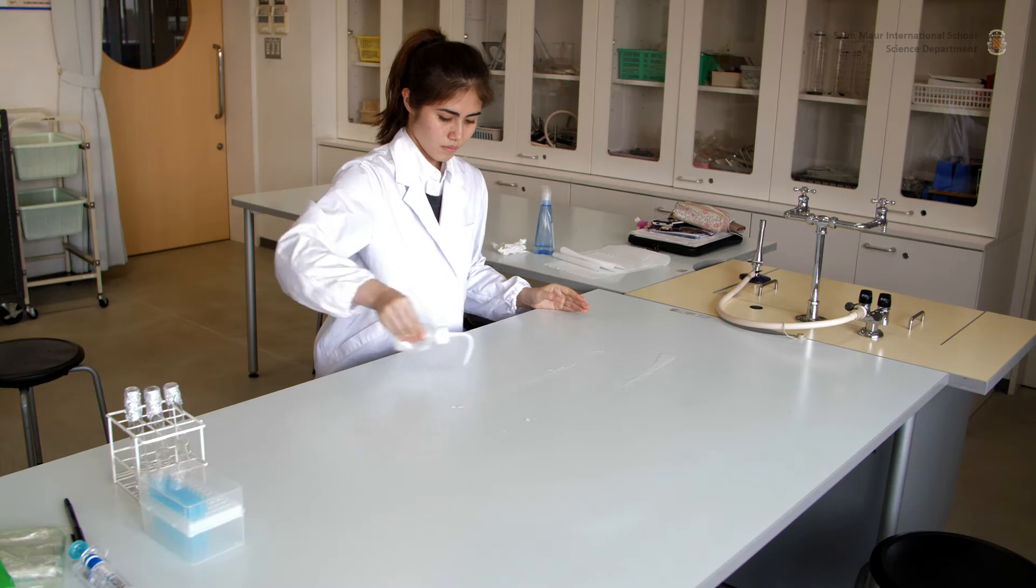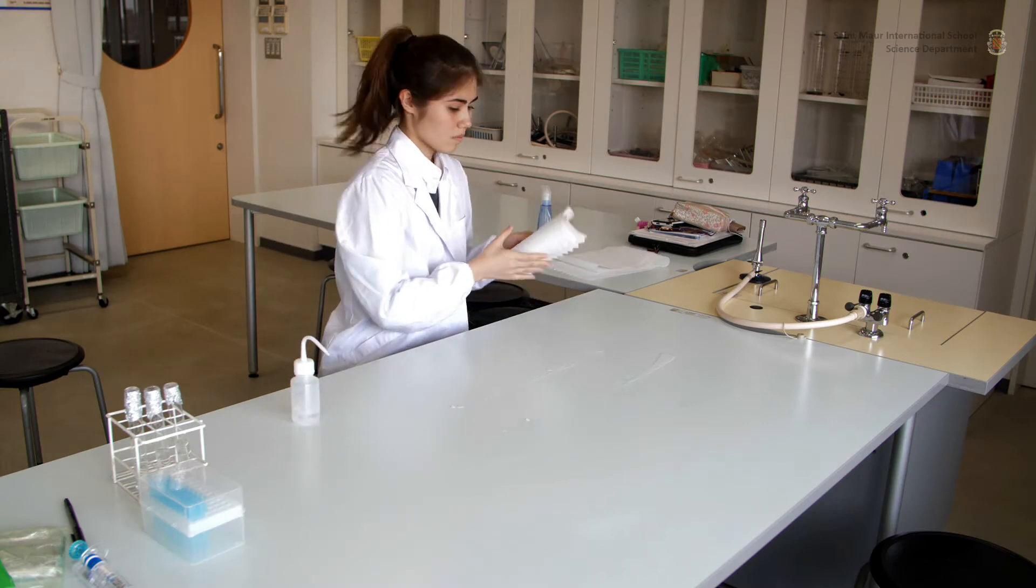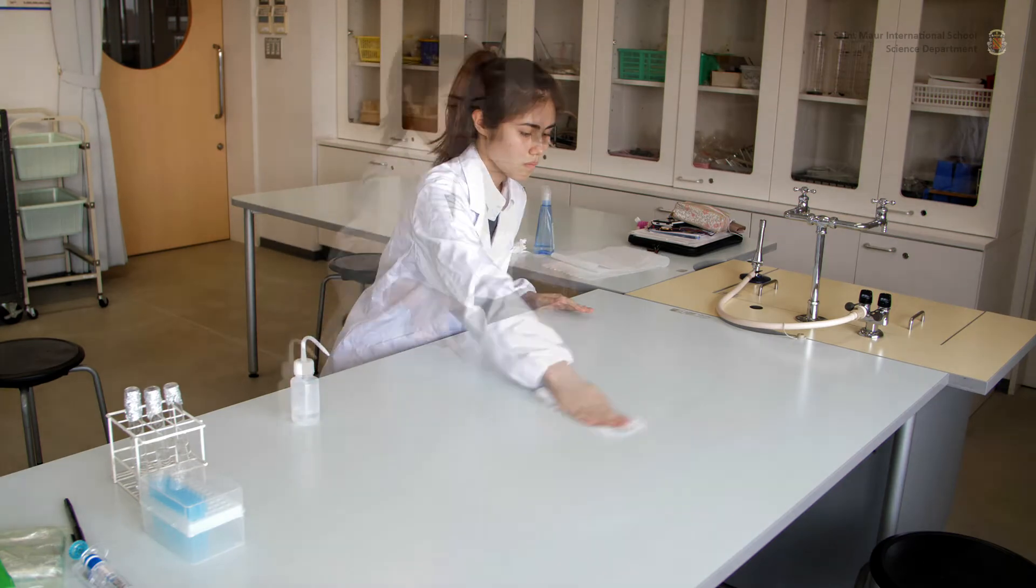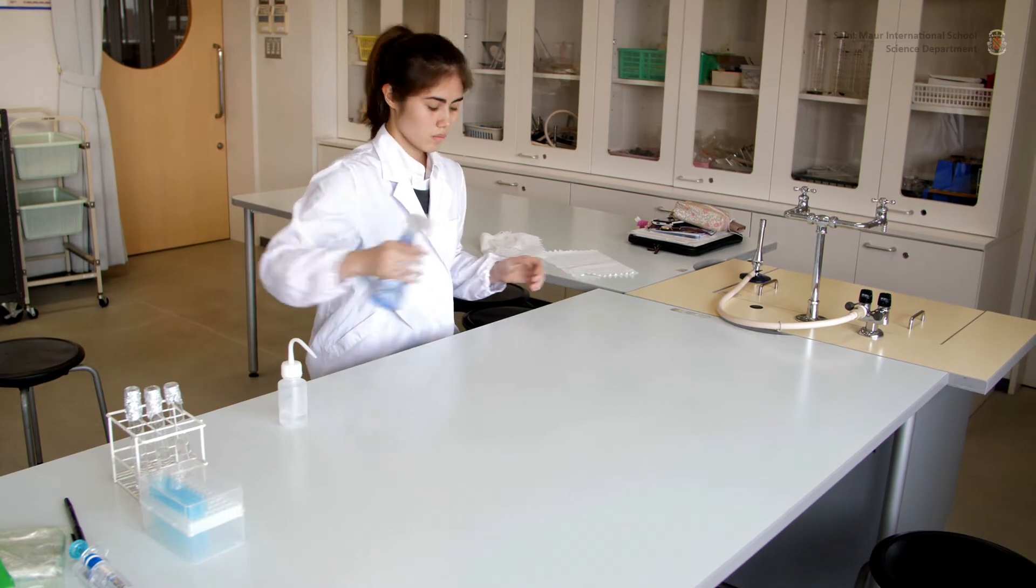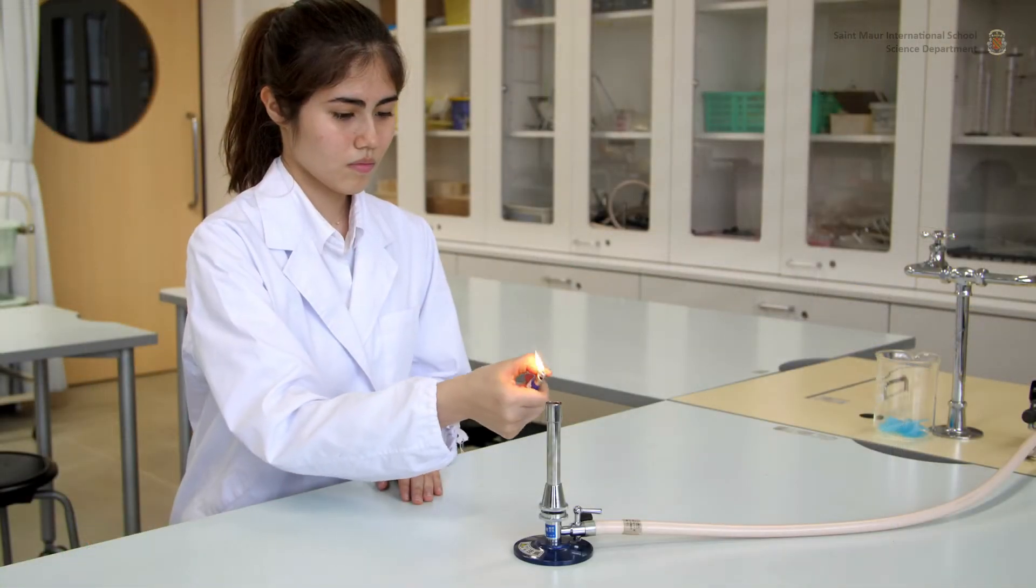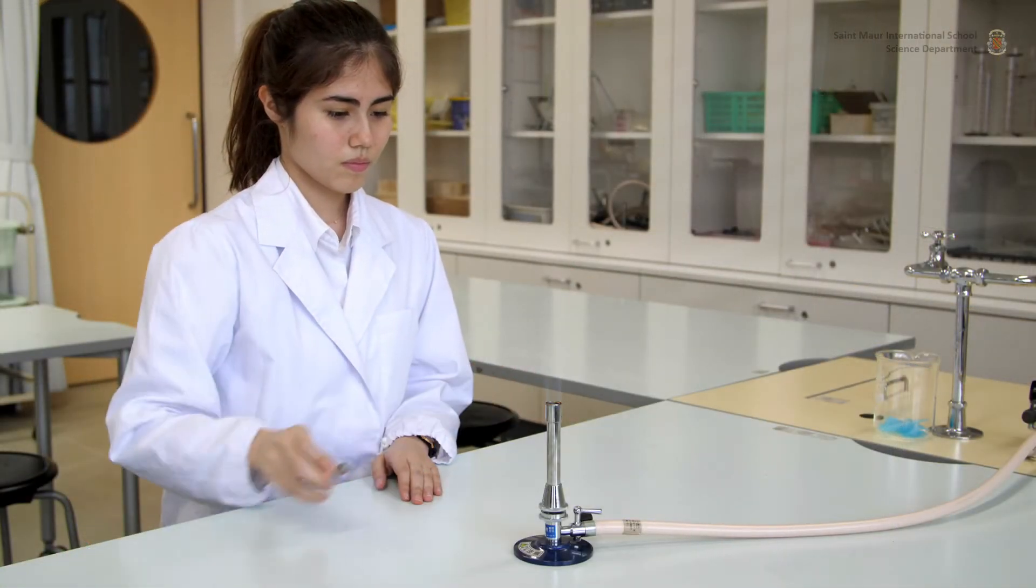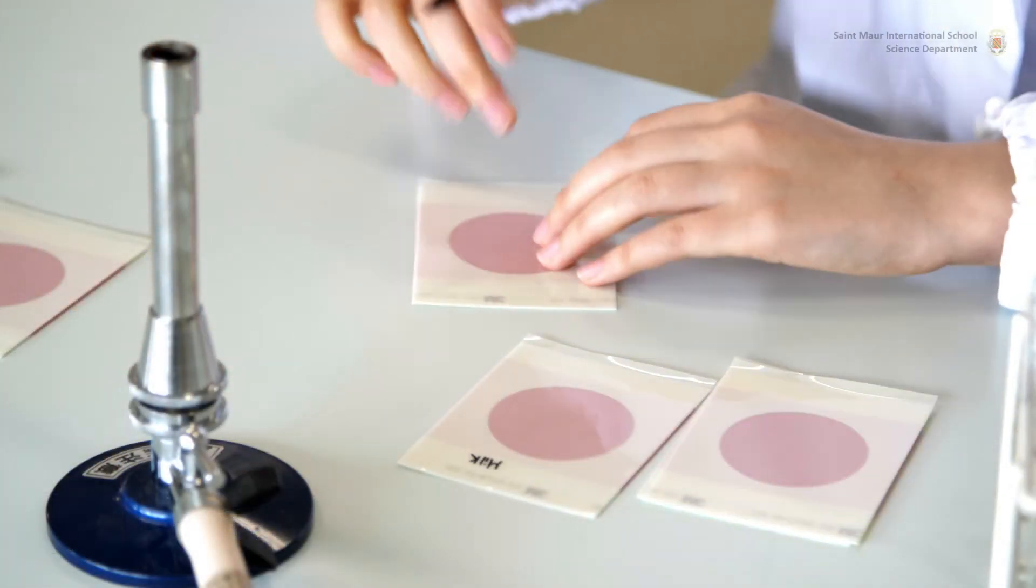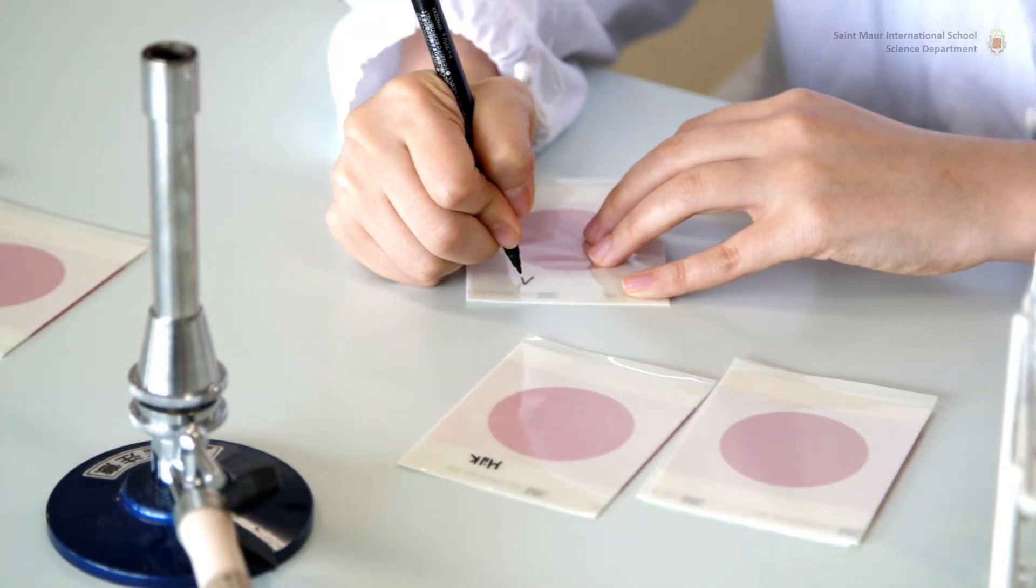Preliminary Steps: Sterilize the bench once with a 10% Milton solution and twice with 70% ethanol. Light a Bunsen burner to establish a cone of sterility. Make sure to label the covers of the petrofilms prior to inoculation.